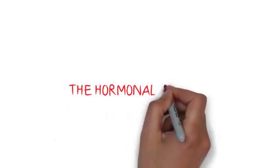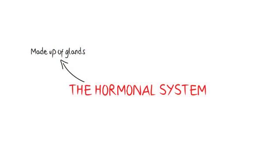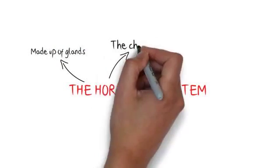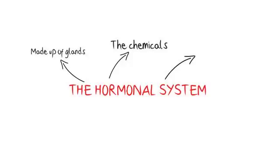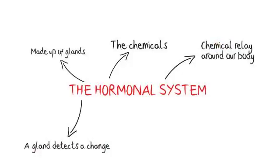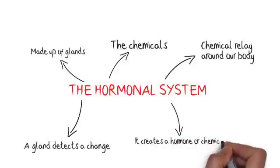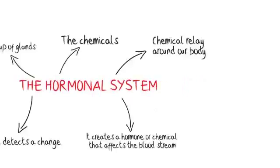The hormonal system is made up of our glands and the chemicals that are secreted by those glands. It's basically a chemical relay around our body. A gland detects a change and has a reaction to that change. It creates a hormone or chemical that affects the bloodstream and causes other reactions that happen afterwards.